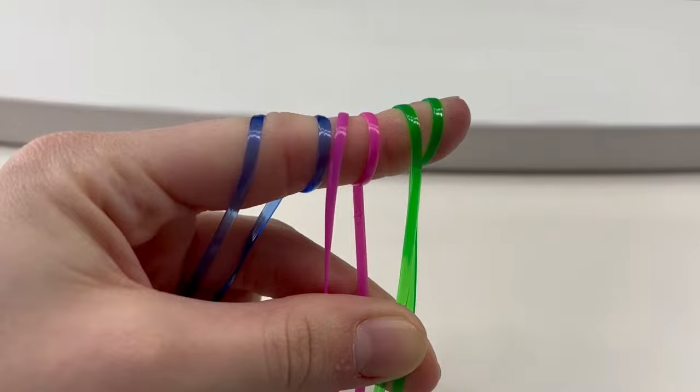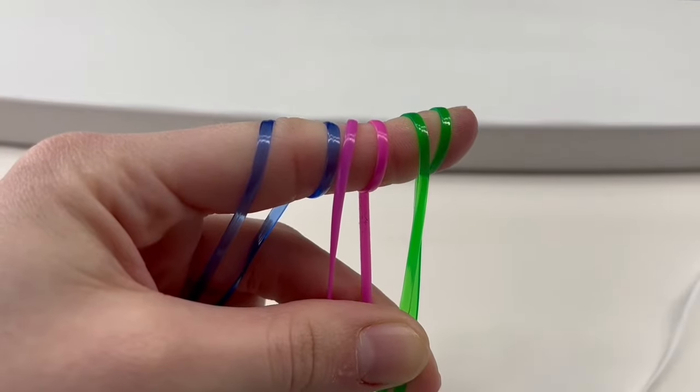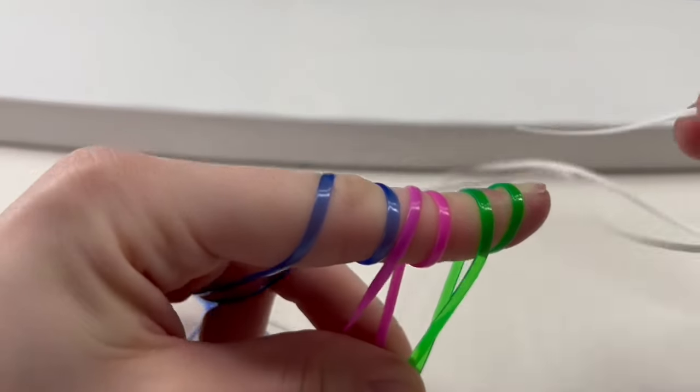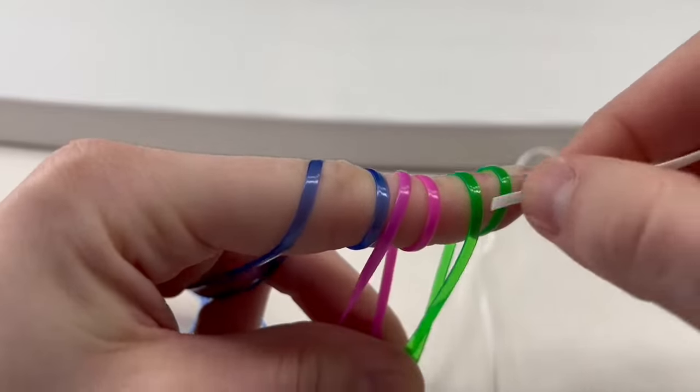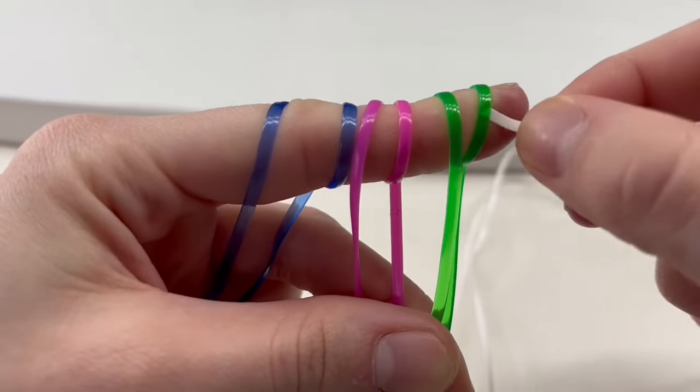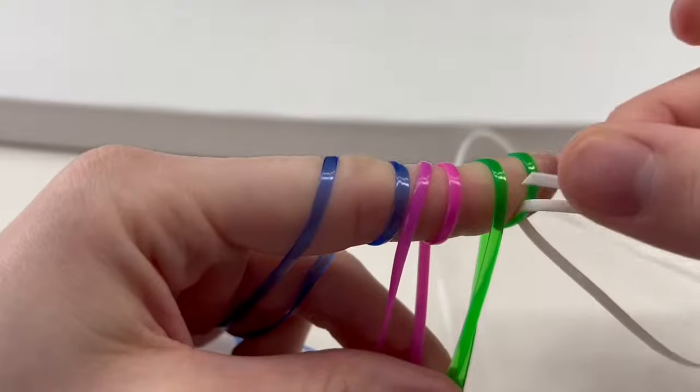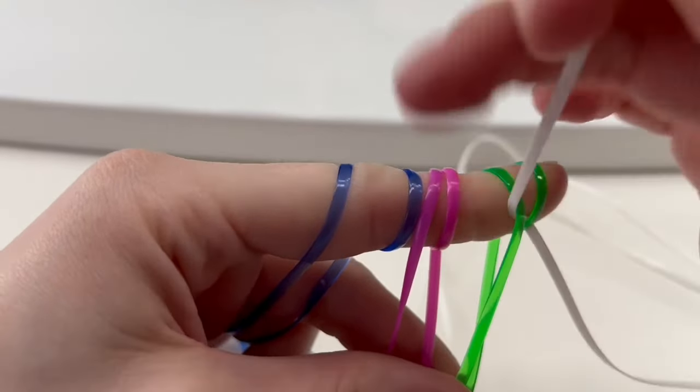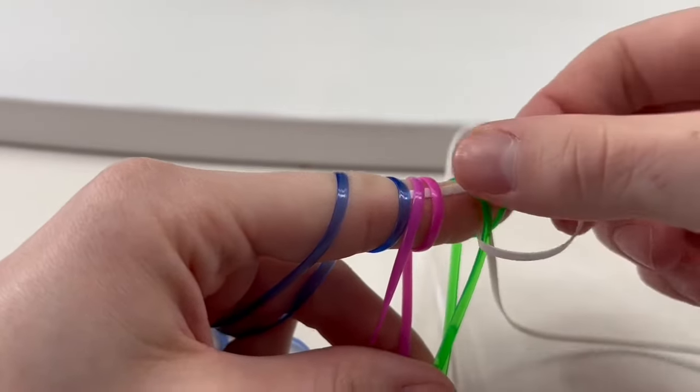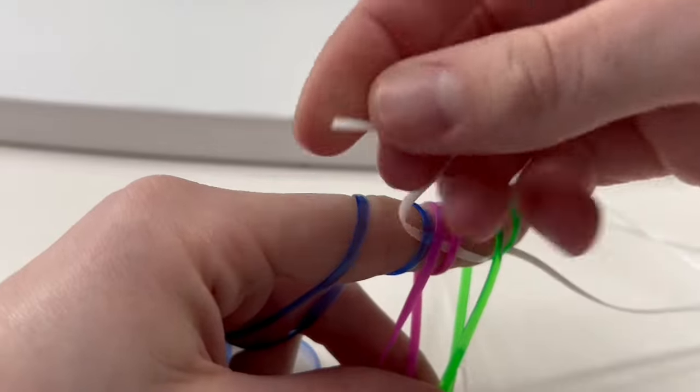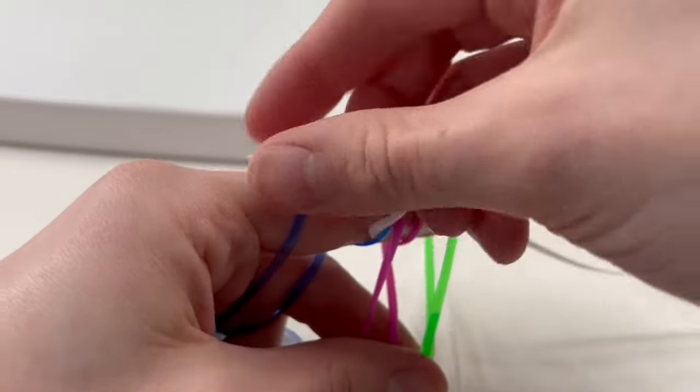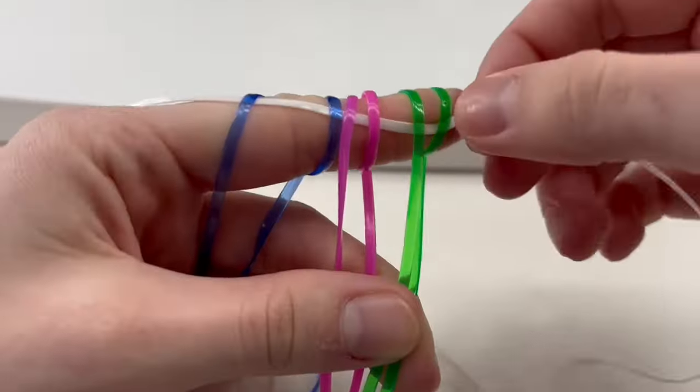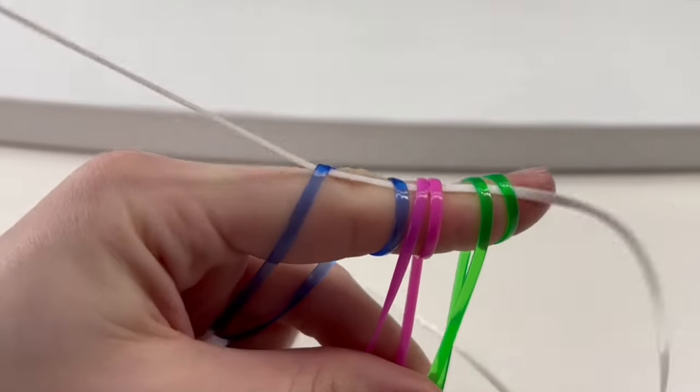Once you have that situated you can take your longer strand and feed it under all of those loops you just made. And you're just going to want to pull this until you find the center and that will be under your middle strand.